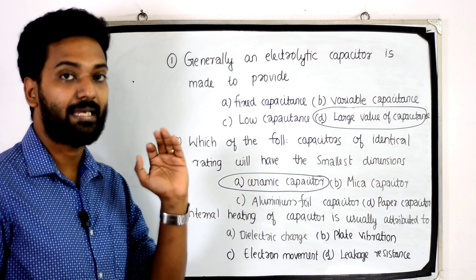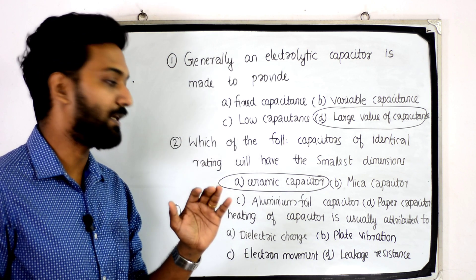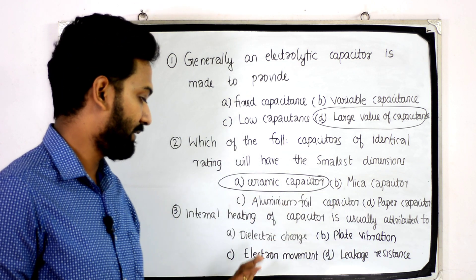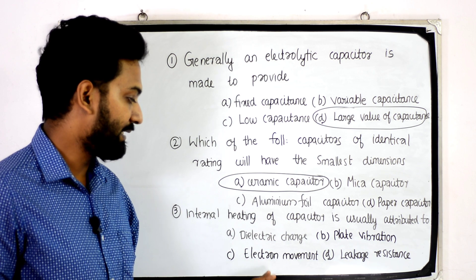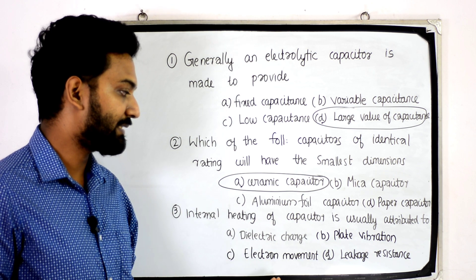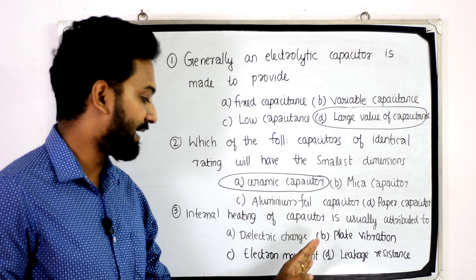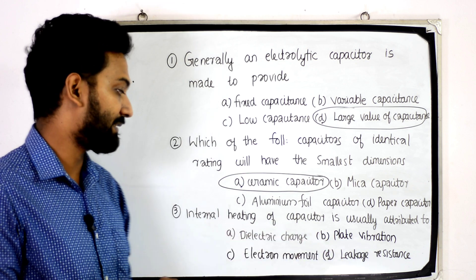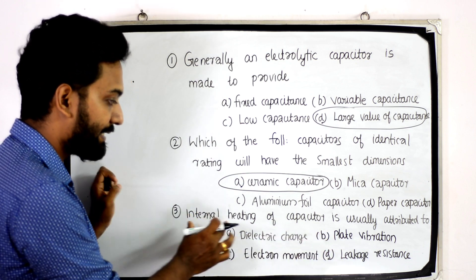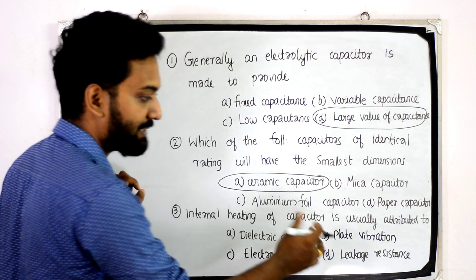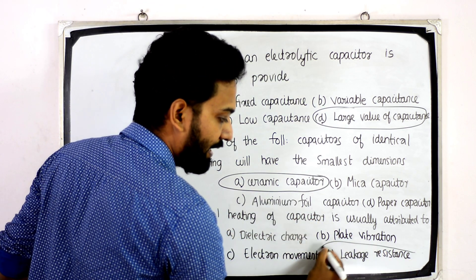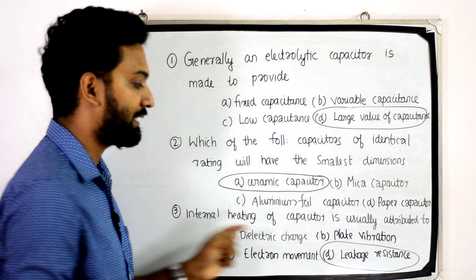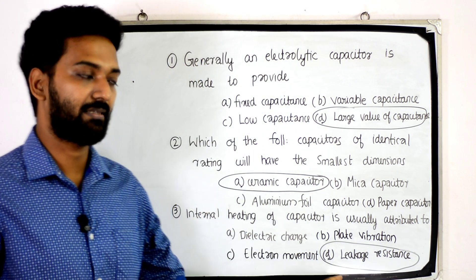Next question: Internal heating of a capacitor is usually attributed to — option: dielectric charge, plate vibration, electron movement, or leakage resistance. Internal heating of a capacitor is usually attributed to leakage resistance, option D.